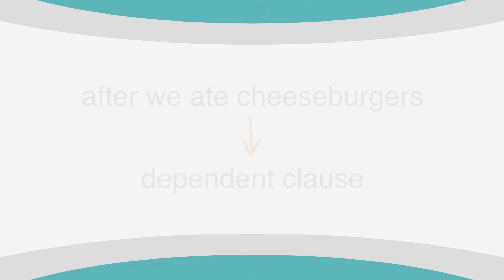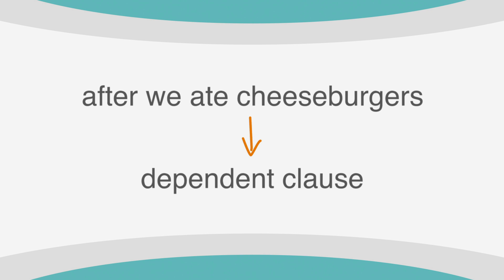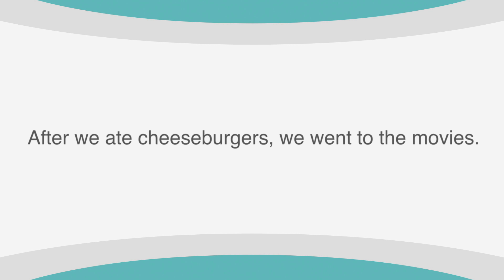A sentence with a dependent and independent clause is a complex sentence. If we had said, 'after we ate cheeseburgers, we went to the movies,' it would be a complex sentence. In this case, 'after we ate cheeseburgers' is the dependent clause, which cannot stand on its own.